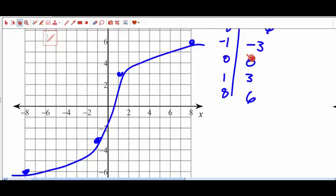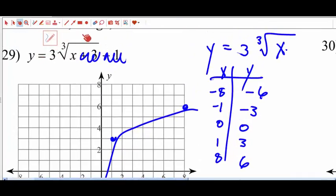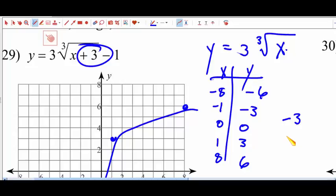Now I'm going to determine what the shift is. Okay, so the shift is going to be negative 3, which is 3 to the left and 1 down.